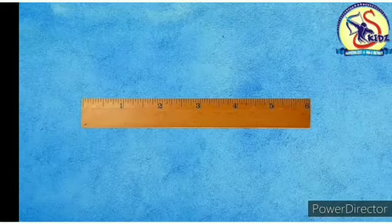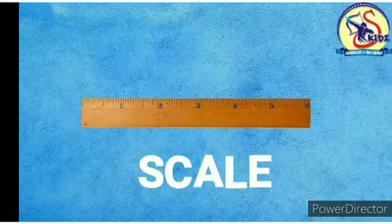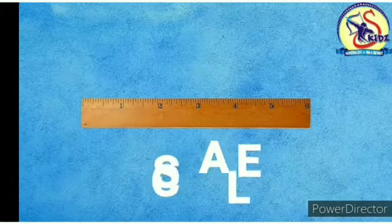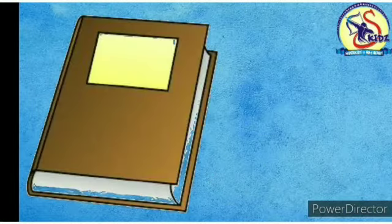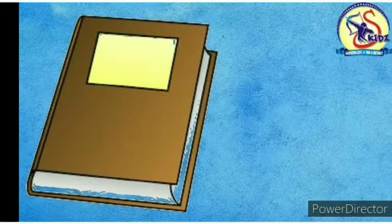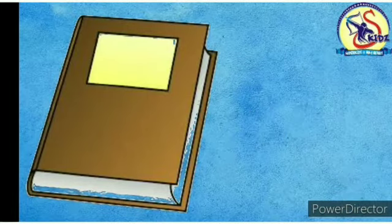Let's see next picture. This is a scale. The shape of scale is rectangle. Which picture is this? This is a book. The shape of book is rectangle.